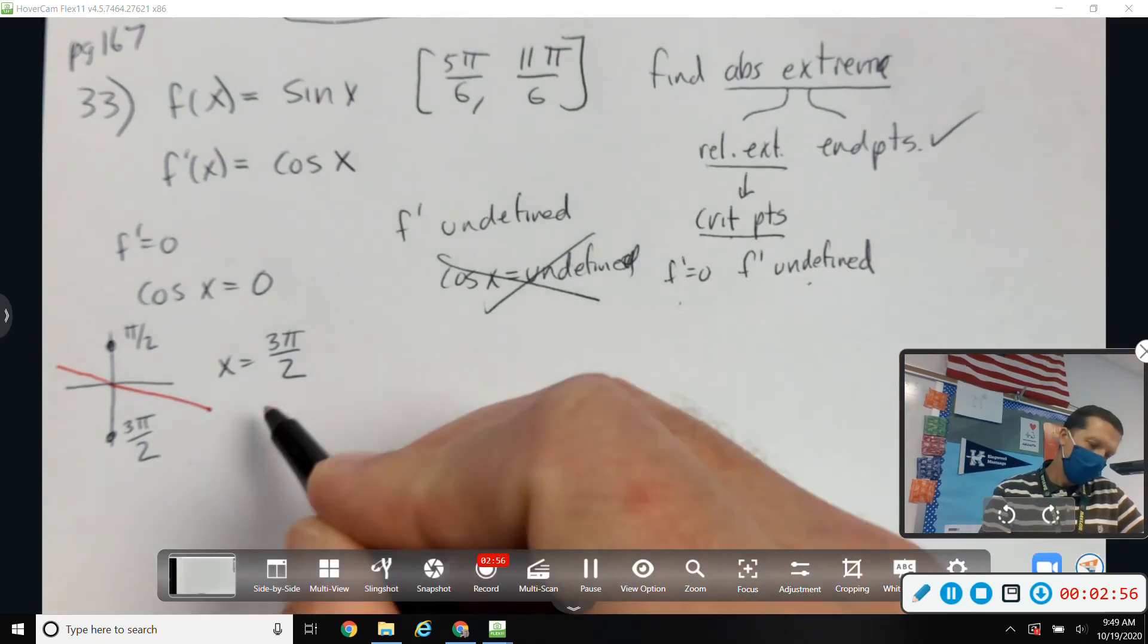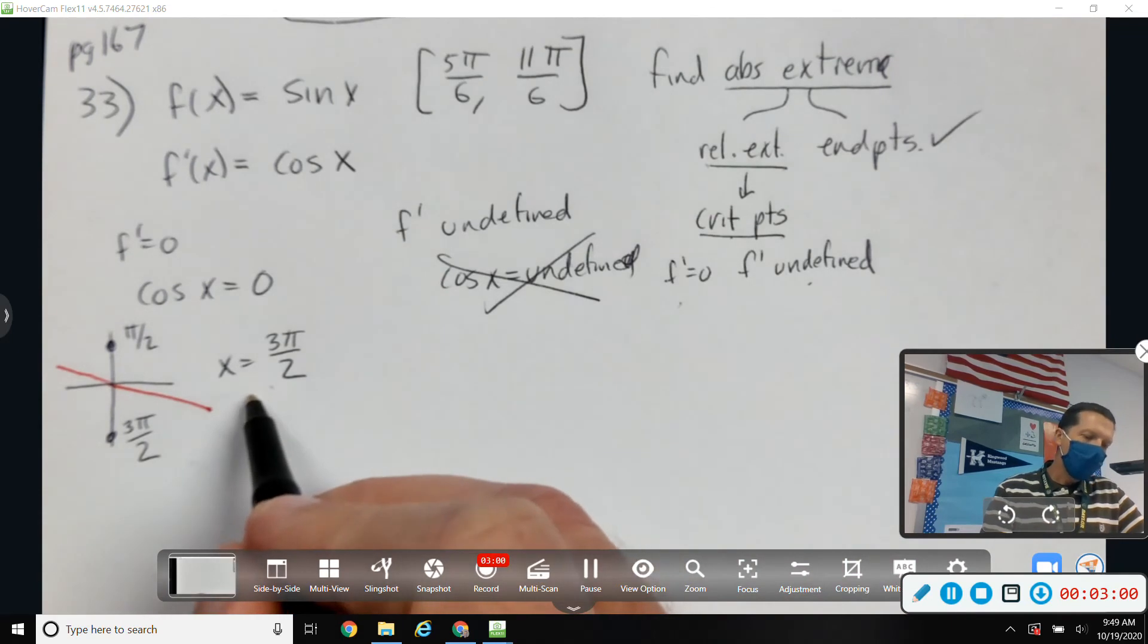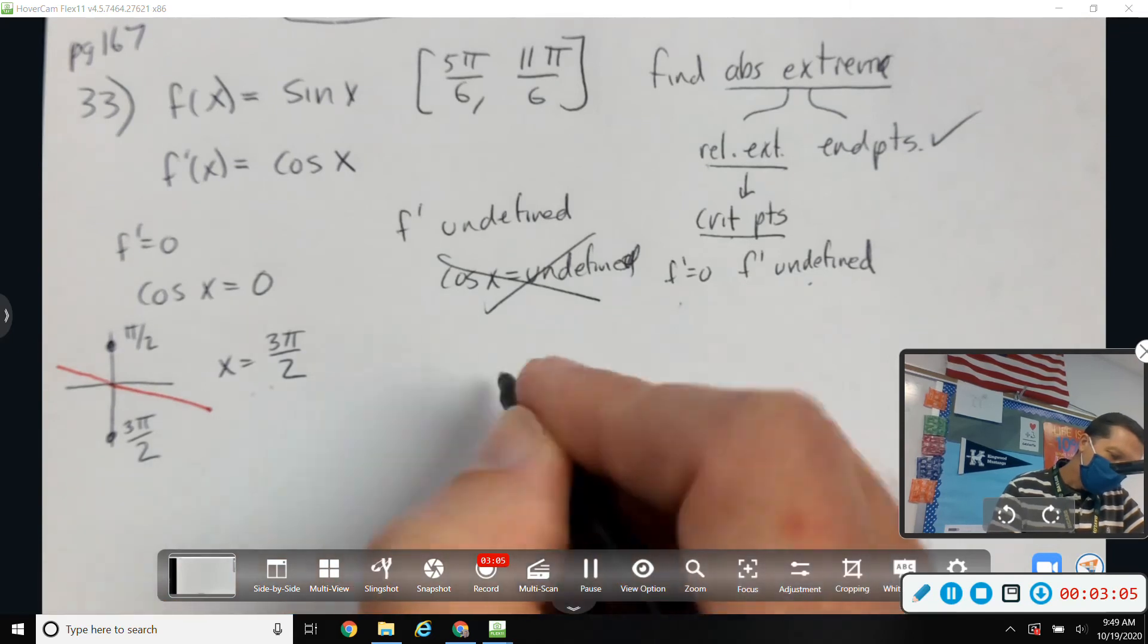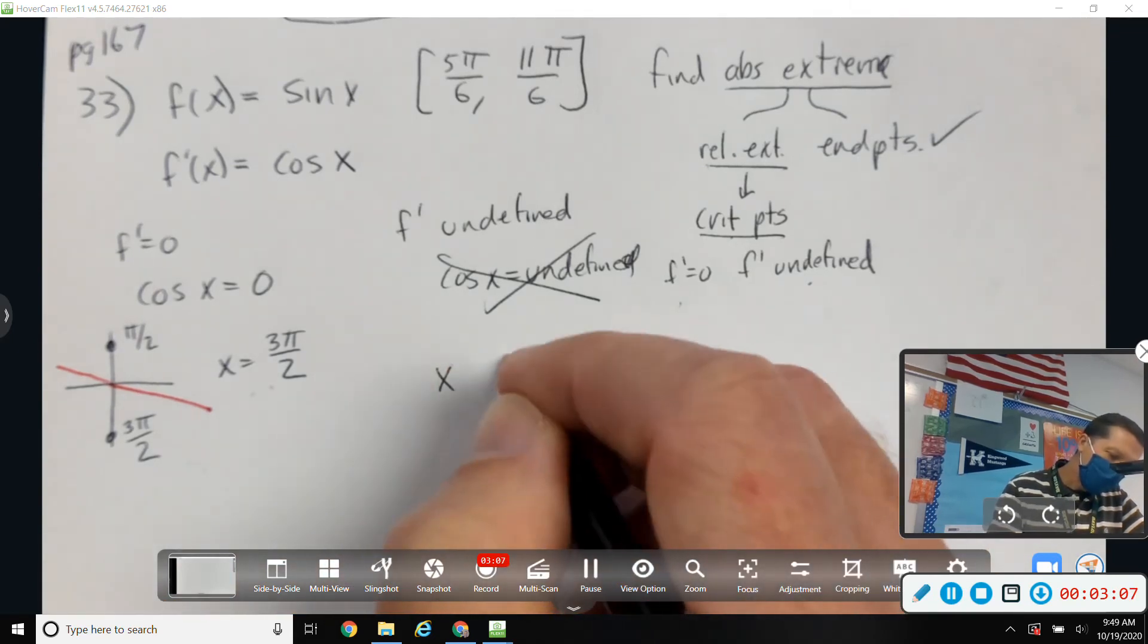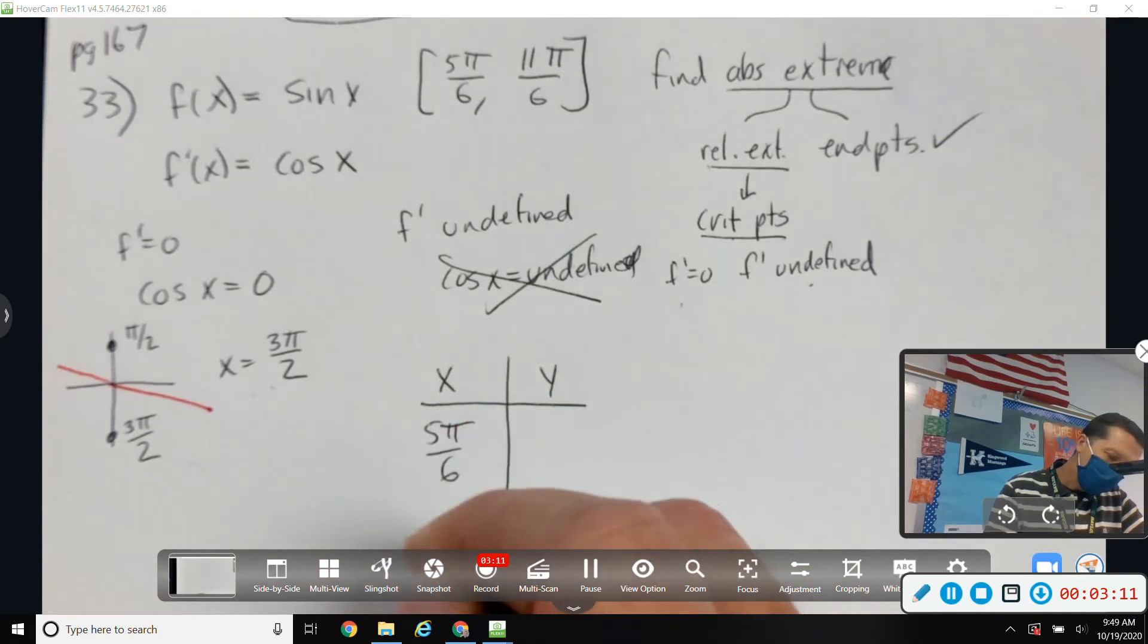So no undefined points. We've got our derivative equals zero point, which might be a relative extrema, which means it might be an absolute extrema. So let's just test our values here. Five pi over six, three pi over two, eleven pi over six.